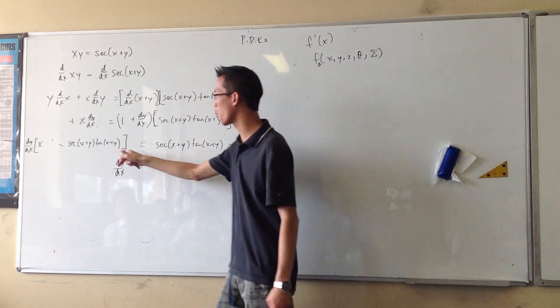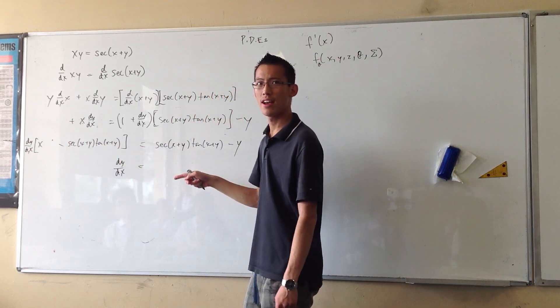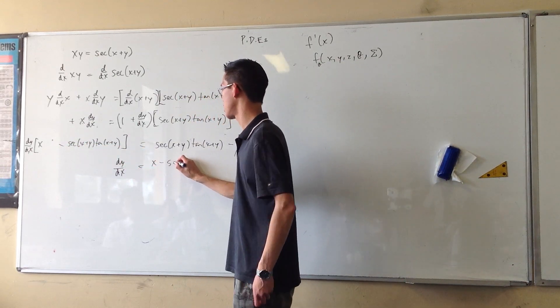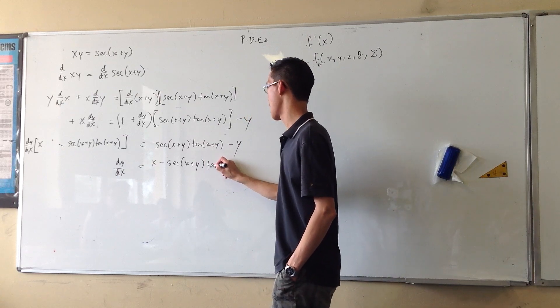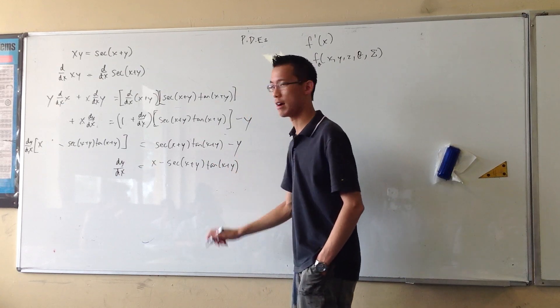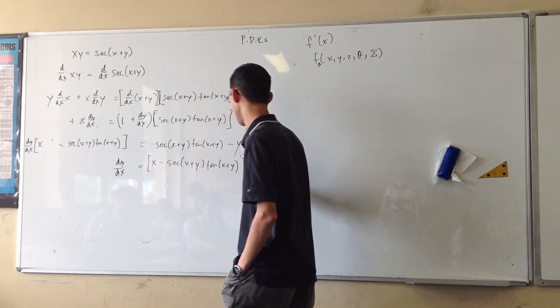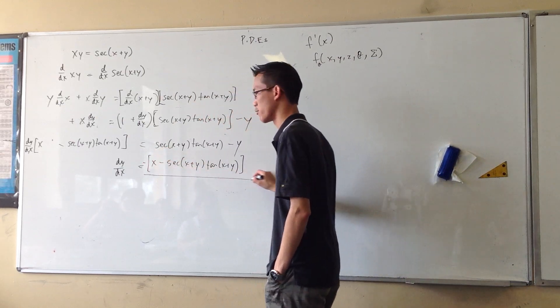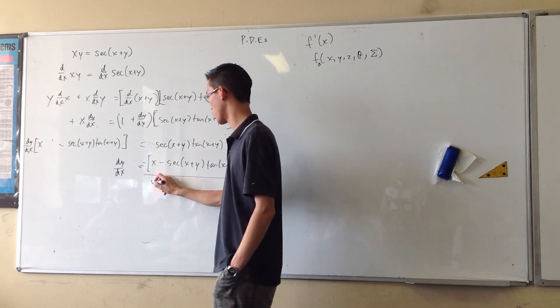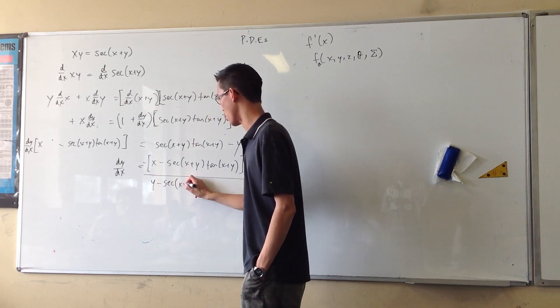Which actually, there's a weird kind of symmetry to it. Right? Because you've got x minus sec(x+y) tan(x+y). And it's very, very similar to what I have here. So, I'm just going to snap a minus sign all on the front, just so I can write the denominator in the same order. Which is y minus this awful headache.